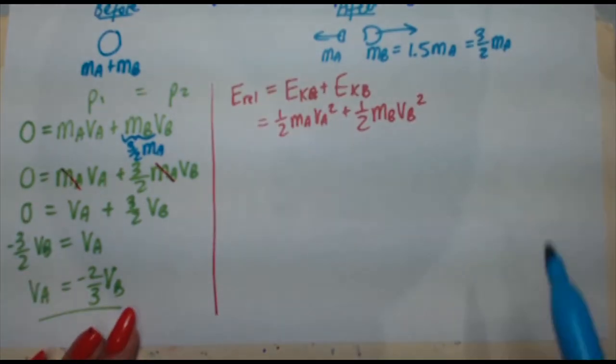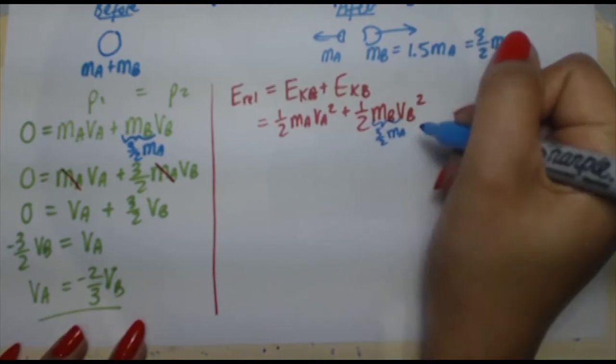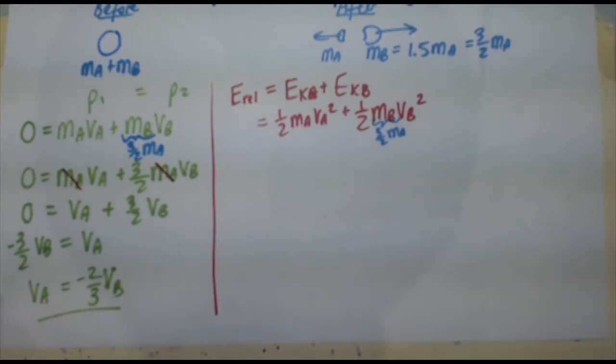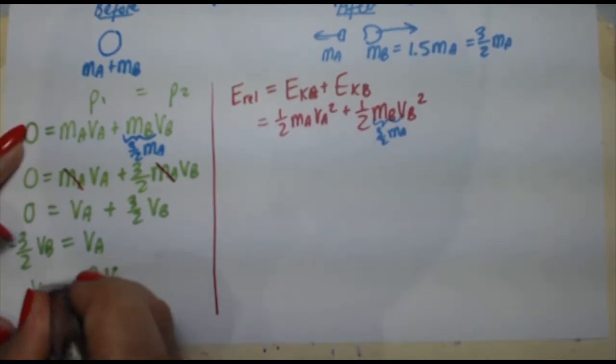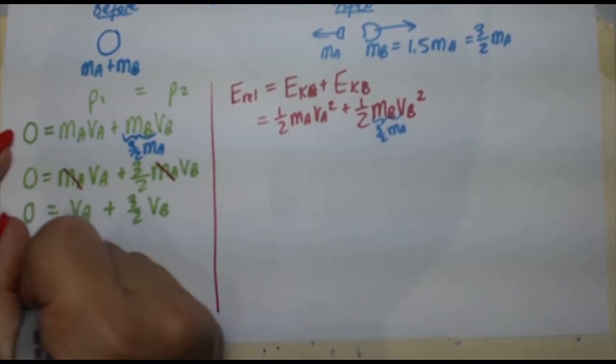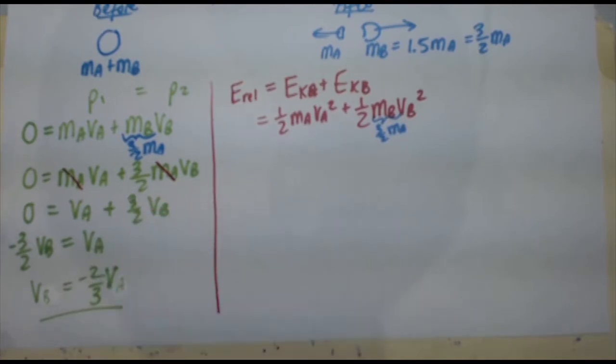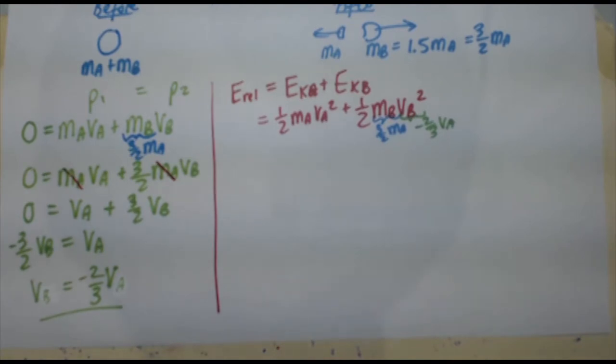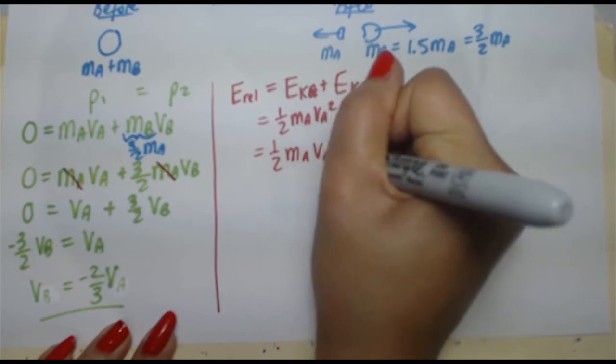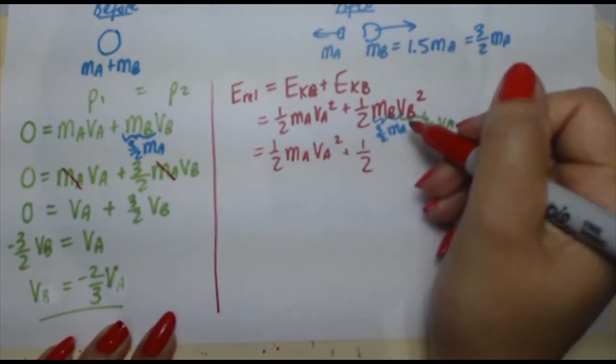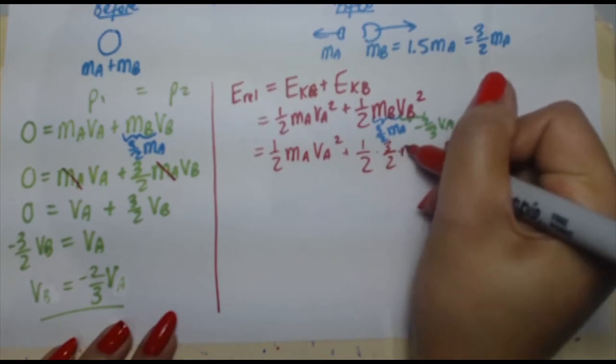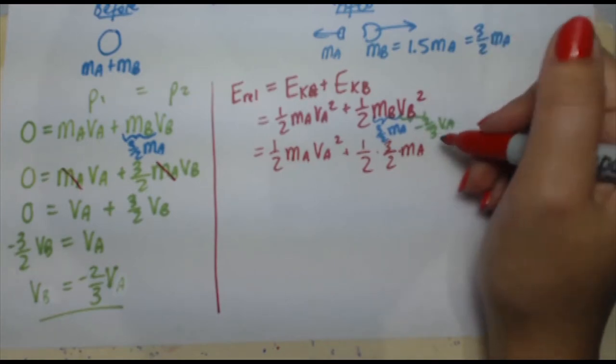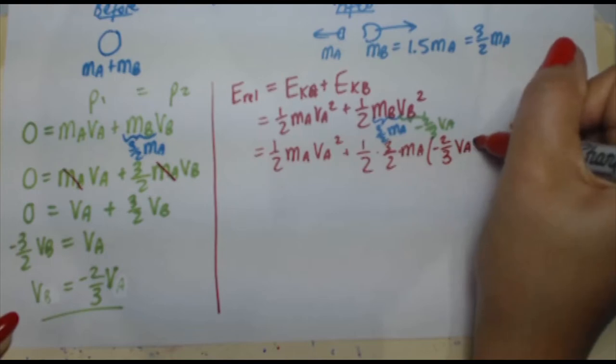Now again, mass of B is 3 halves mass of A. And we also can convert the VA into VB or the VB into VA. It should be VB equals negative 2 thirds vA. So I've got a few different substitutions I can do here. So 1 half mA vA squared plus 1 half mB is 3 halves mA. And then VB is negative 2 thirds vA. Now be careful because VB is being squared. So just make sure you remember to square it. So negative 2 thirds vA squared.